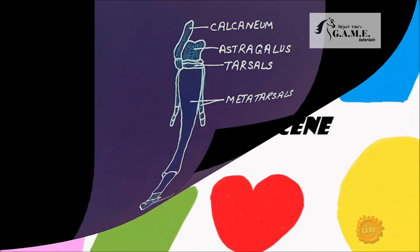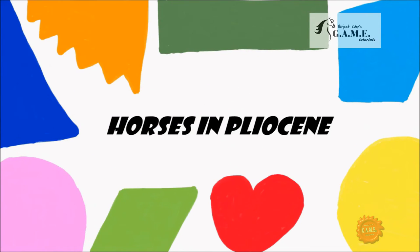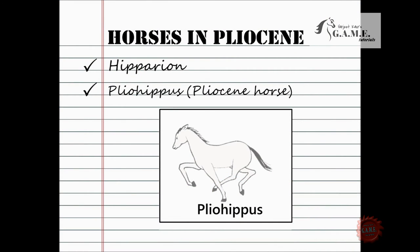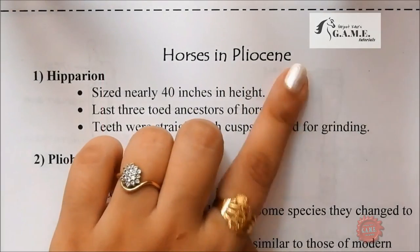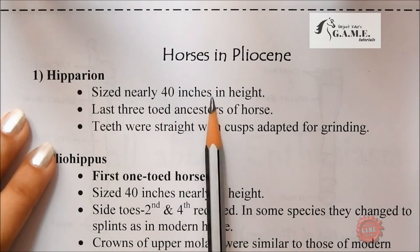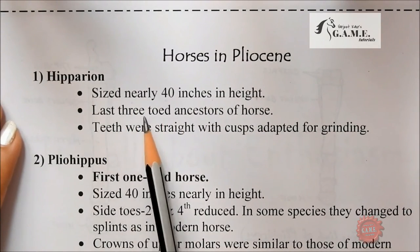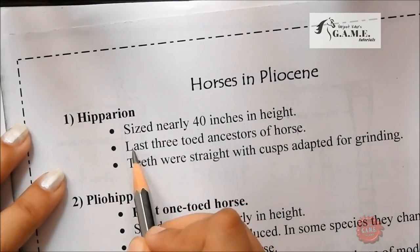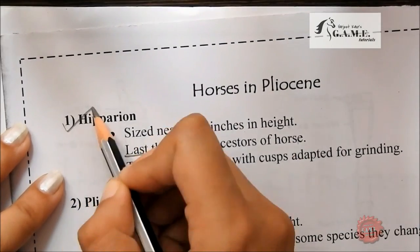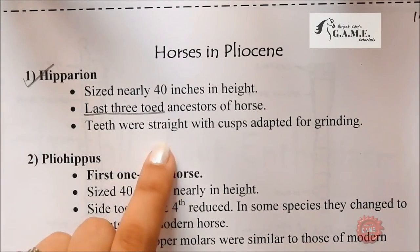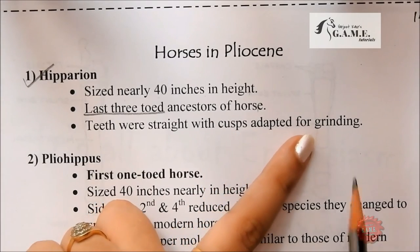Moving to horses in the Pliocene: we have Hipparion and Pliohippus. Pliohippus is also called the Pliocene horse. Hipparion was nearly 40 inches in height and was the last three-toed ancestor of the horse. Teeth were straight and adapted for grinding.